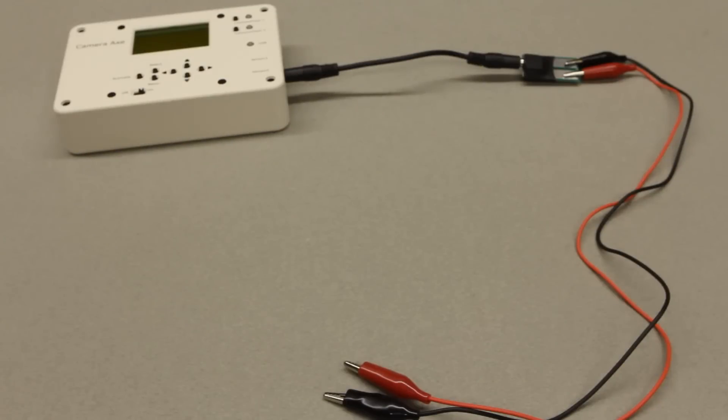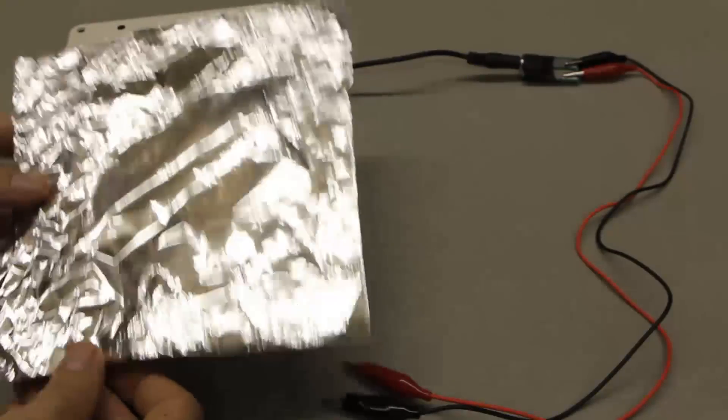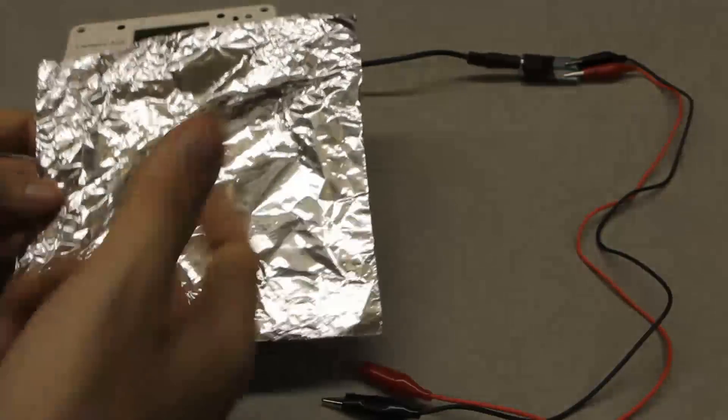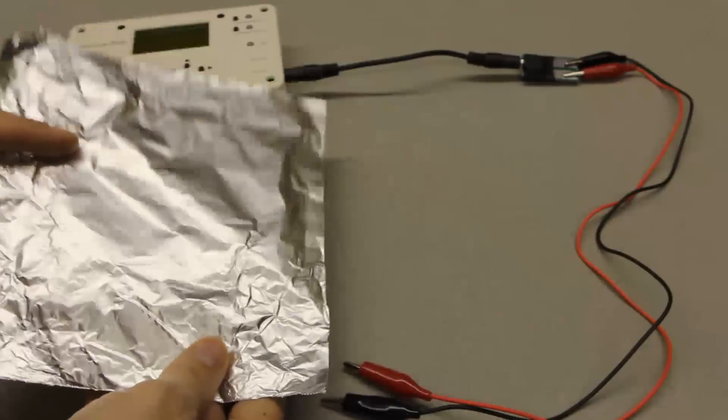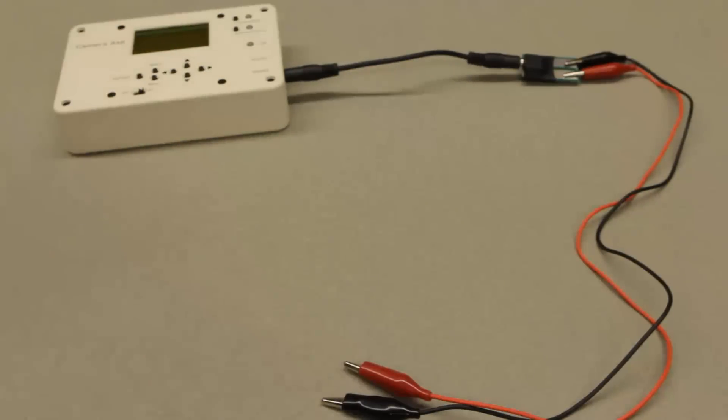One thing you need to remember when setting up the clip sensor is that the substance causing the open and short circuits between these two alligator clips needs to be conductive. One really cheap, versatile conductive substance I use is tinfoil. I made a lot of different sensors using tinfoil.